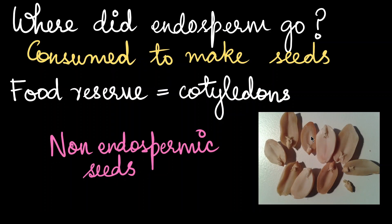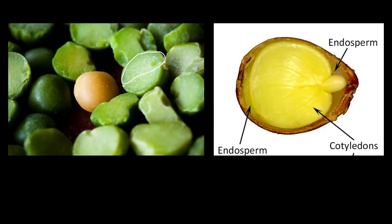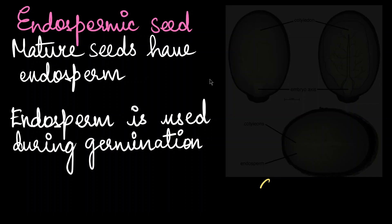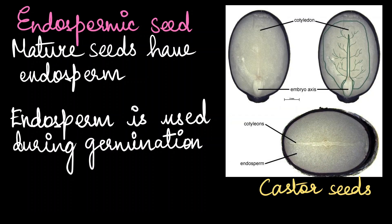Peanuts are an example of non-endospermic seeds — we can see really fleshy cotyledons here. The pea plant is also a non-endospermic example, though interestingly there are evidences of a thin layer of endosperm. They are non-endospermic because their cotyledons are quite large compared to the endosperm, making them excellent samples to study how endosperms are transformed into cotyledons. A very interesting example of a mature endospermic seed is the castor seed, where the cotyledon is present at the center as a very thin layer and the fleshy part on the outside is the endosperm.